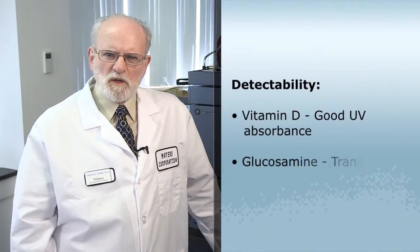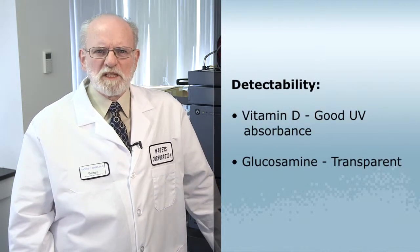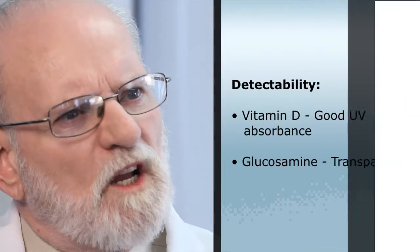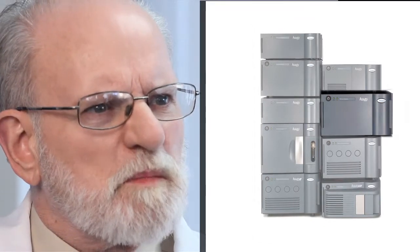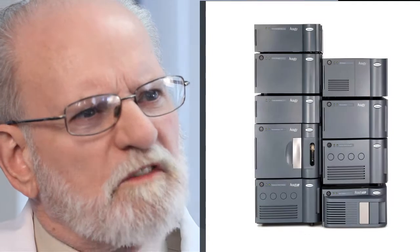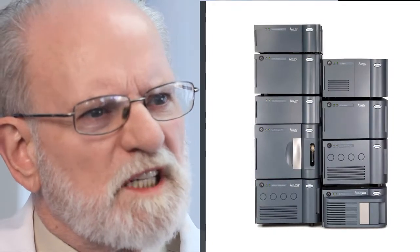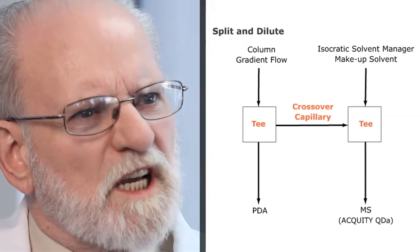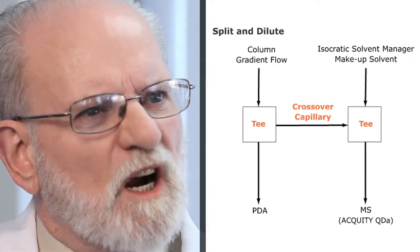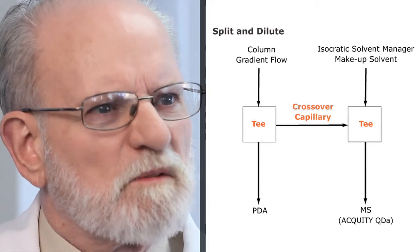Finally, the two components of this sample have very different detectability. The vitamin D is a good UV absorber while the glucosamine is completely transparent. So we use parallel detection with the Acquity QDA mass detector and the Acquity UPLC PDA. The column flow is delivered to the two detectors through the isocratic solvent manager. A split and dilute technique ensures that both detectors are in their respective linear ranges.